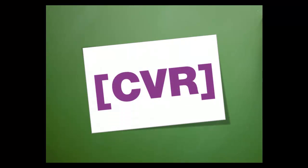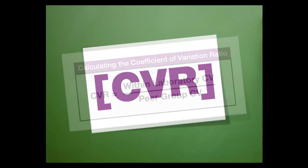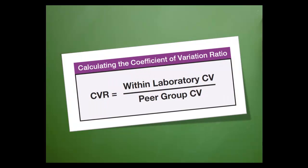In shorthand you'll often see the coefficient of variation ratio expressed as CVR. This is the formula for calculating CVR. Let's pick it apart so that you can better understand it.